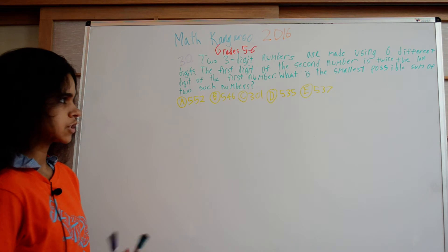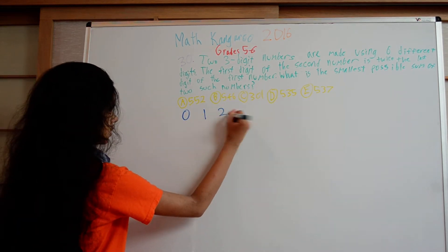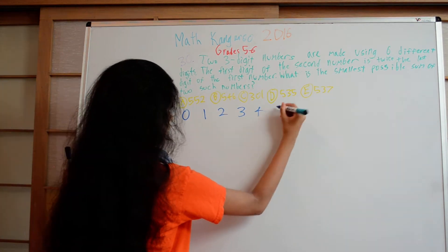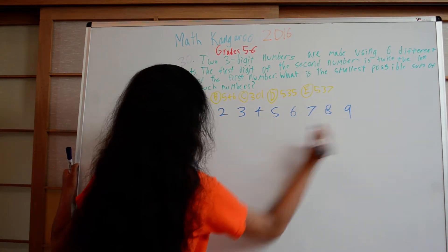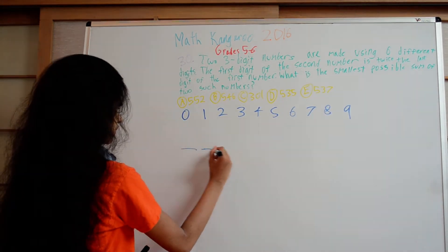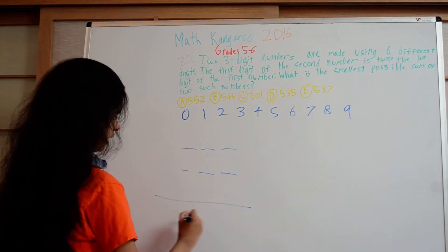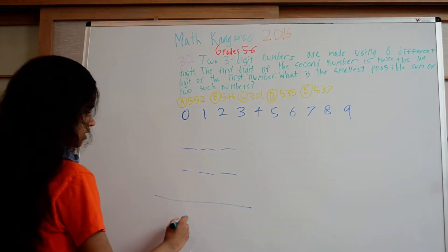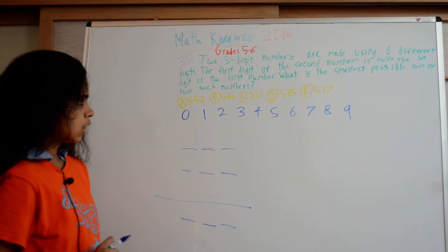We can start trying to construct the numbers so that each number is as small as possible. Here we have the digits and we have to choose six different digits. We have two numbers here and each number has three slots. Then we'll add them to get a three-digit number here, and that's what we're looking for.